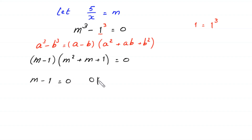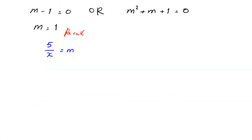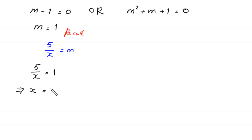From the factorization, either m minus 1 equals 0 or m² plus m plus 1 equals 0. From the first case, m equals 1. Recalling that 5/x equals m, we put m equals 1, so 5/x equals 1. Multiplying both sides by x gives x equals 5. This is the first value of x.